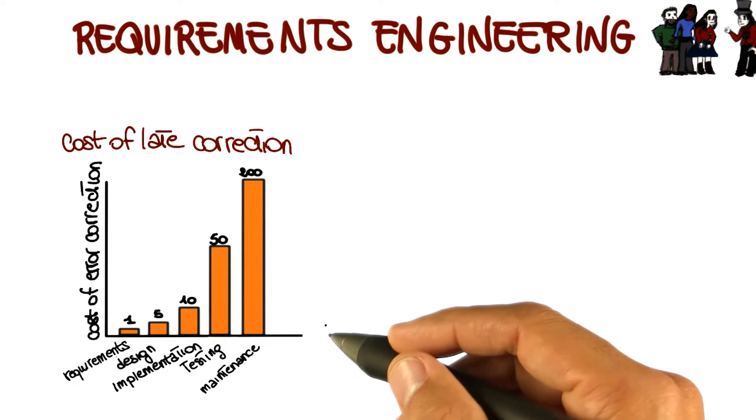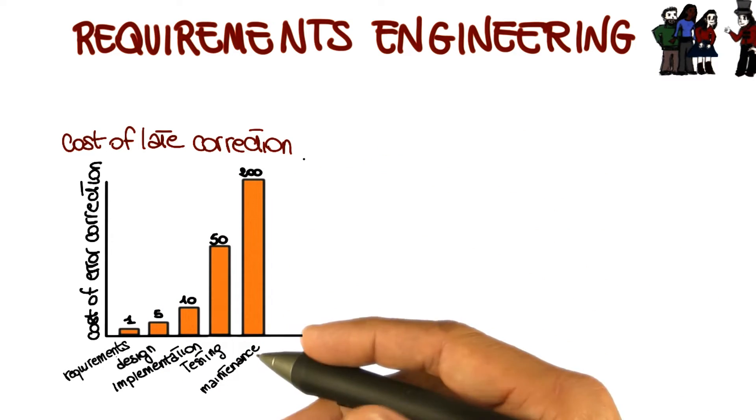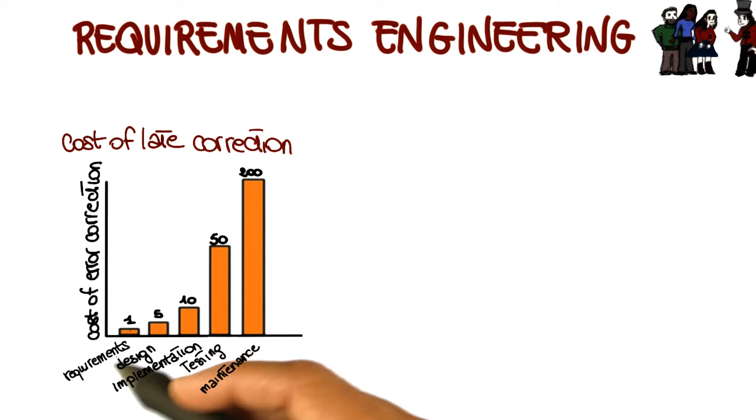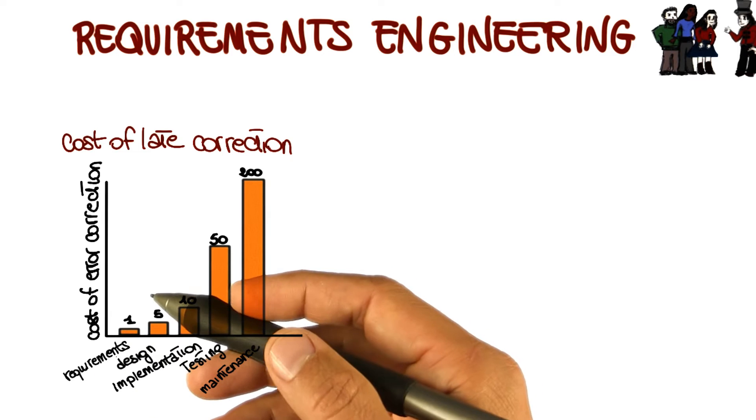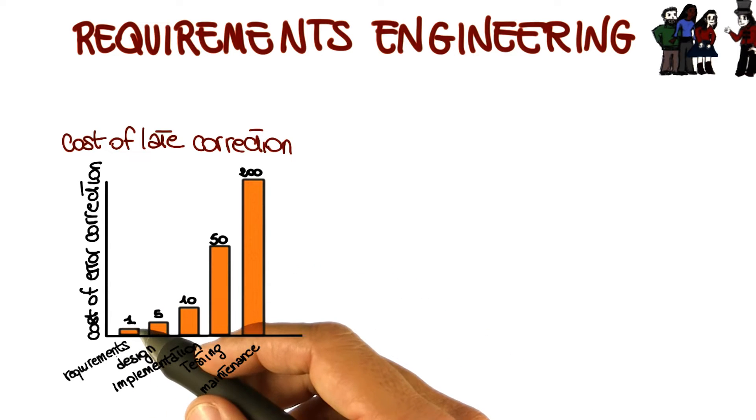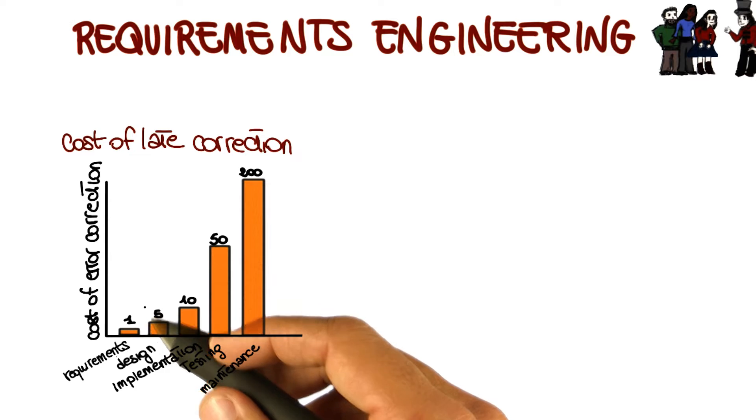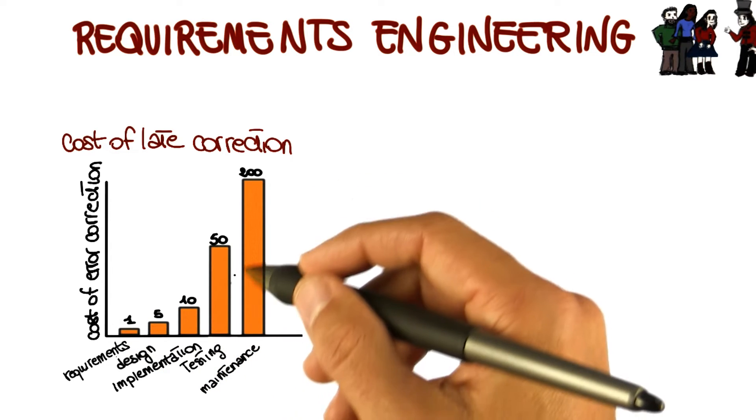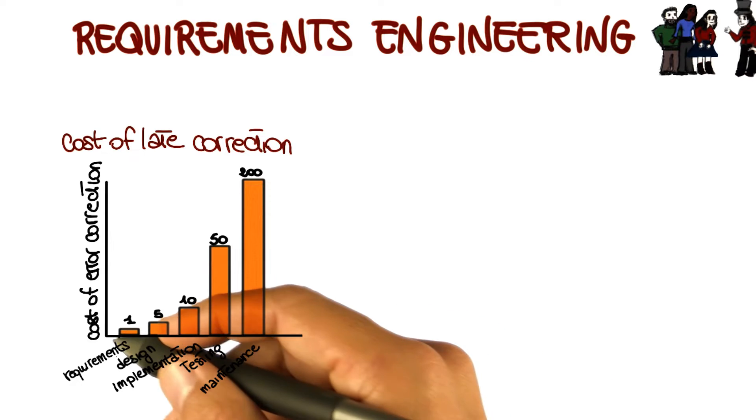In fact, if we look at this diagram, which is a qualitative diagram, we have the cost of error correction over the phase in which the error is discovered. We can see that if we discover an error in requirements, it's going to cost us one. If we find it in design, it's going to cost us five, and so on. The cost grows dramatically as we go from the requirements phase to the maintenance phase.